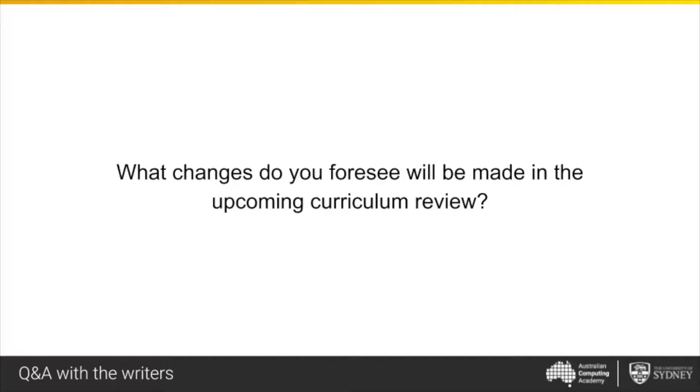Leanne Cameron asks: what changes do we foresee in the upcoming curriculum review? Paula: There was a management theory about dynamic equilibrium — when you change, you need to keep about 60–70% of what was there, nudge about 15–20%, and then introduce something bold and brand new. We are aiming to not totally rock the boat. The aim is to nudge, improve clarity, and help teachers better implement the intention of the curriculum.